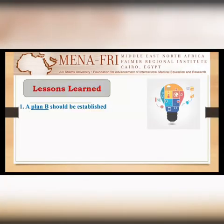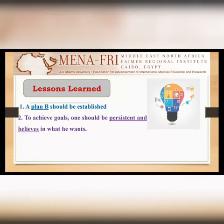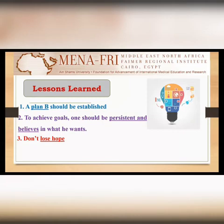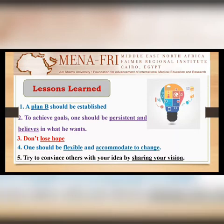The lessons learned from this experience: a contingency plan should always be established — it is very important to have a plan B, or even a longer-term plan. To achieve goals, one should be persistent and believe in what they want. Don't lose hope, whatever the obstacles. One should be flexible and accommodate change, and try to convince others with your idea by sharing your strategy.